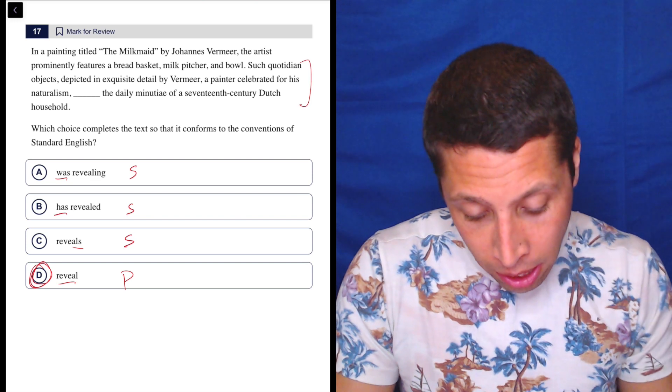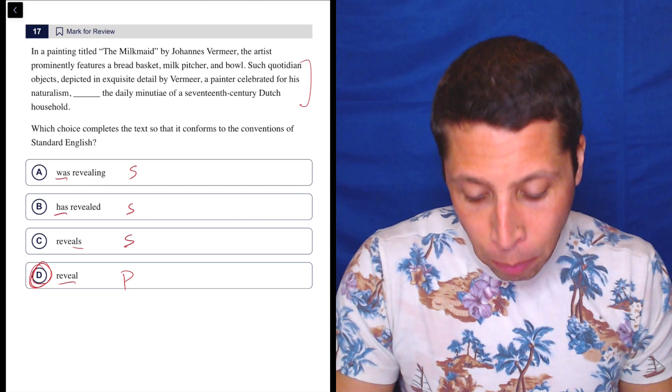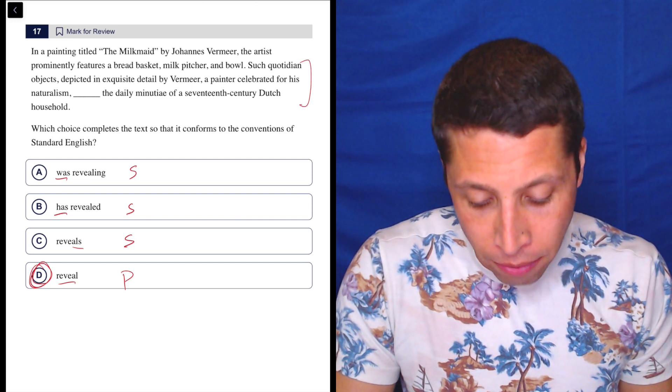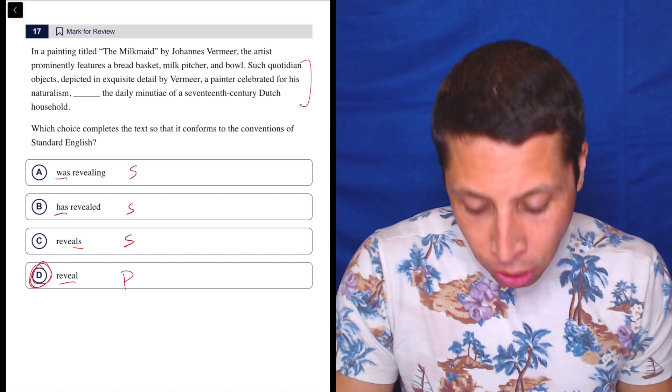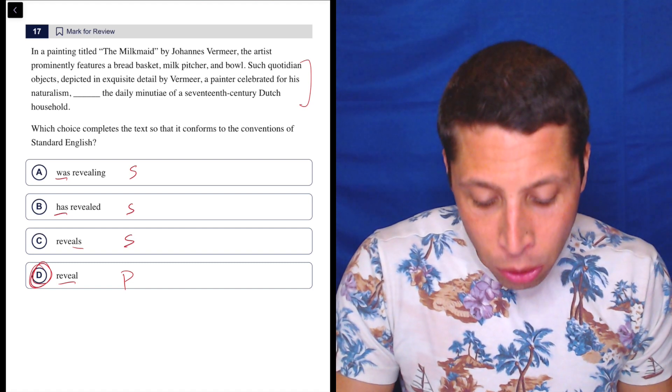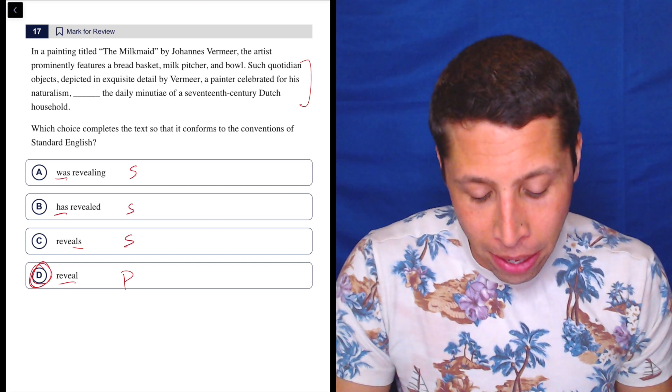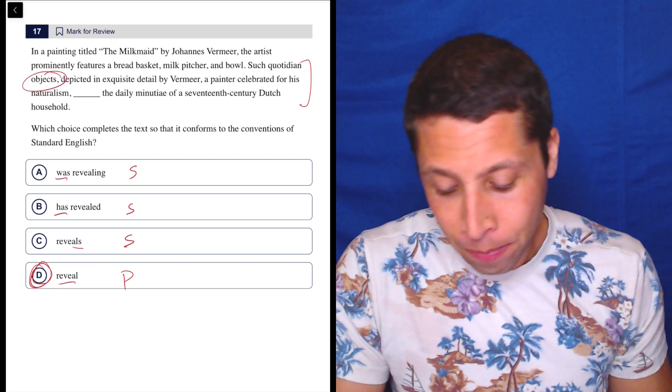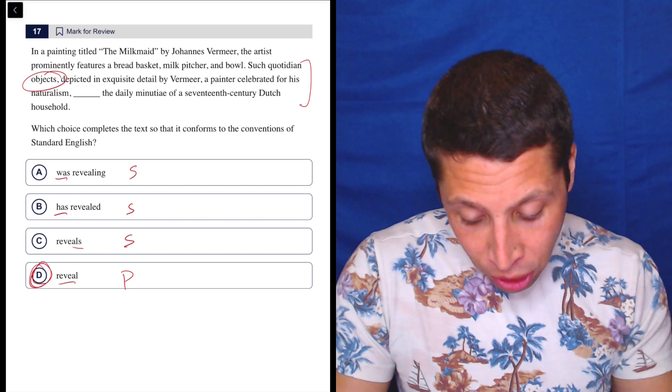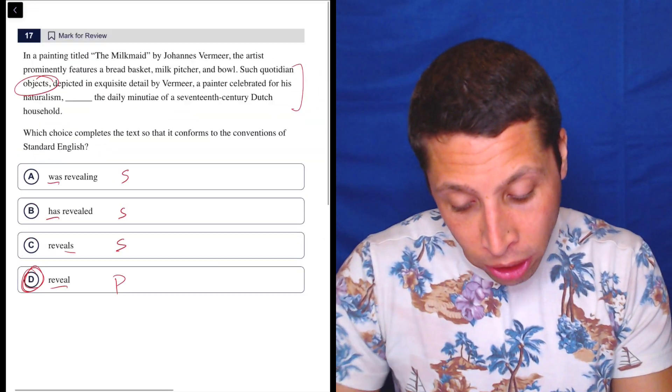So let's see. It's about this sentence here: 'Such quotidian objects depicted in exquisite detail by Vermeer, a painter celebrated for his naturalism, reveal the daily minutia of a 17th century Dutch household.' It's a lot of tough words in there, but it's 'objects.' Such quotidian objects reveal the daily minutia. And so there you go.